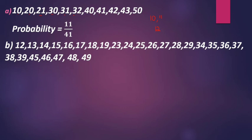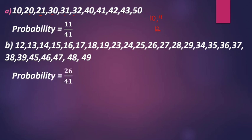Now we are going to count: 1, 2, 3, 4, 5, 6, 7, 8, 9, 10, 11, 12, 13, 14, 15, 16, 17, 18, 19, 20, 21, 22, 23, 24, 25, 26. So the total favorable outcomes are 26, and the probability is 26 by 41.